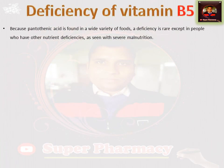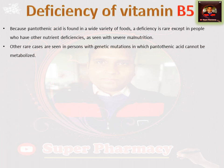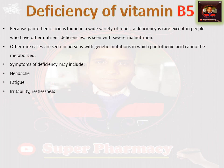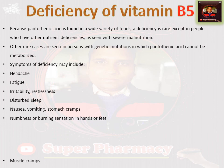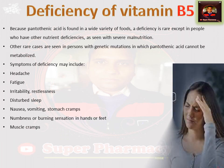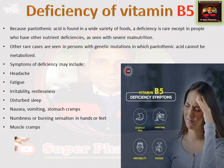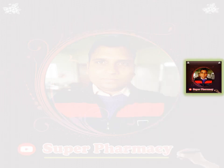Deficiency of Vitamin B5 is not very common because it is found in almost all varieties of food. However, if someone has a metabolic disorder and pantothenic acid is not being metabolized properly in the body, they may experience: headache, fatigue, irritability, restlessness, disturbed sleep, nausea, vomiting, stomach cramps, numbness, burning sensation in hands and feet, and muscle cramps.